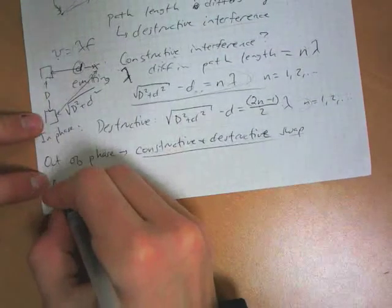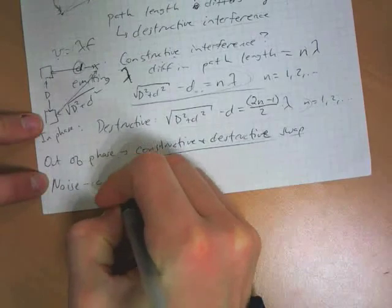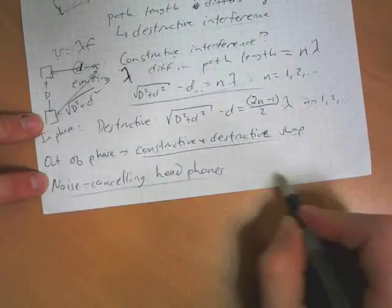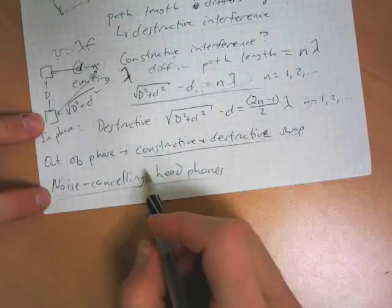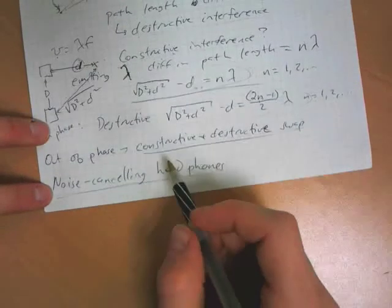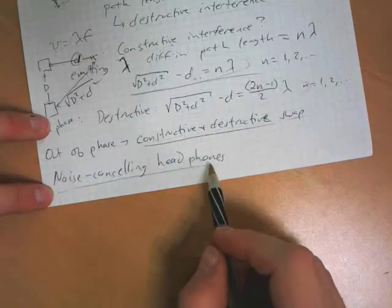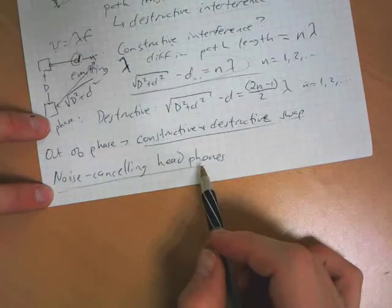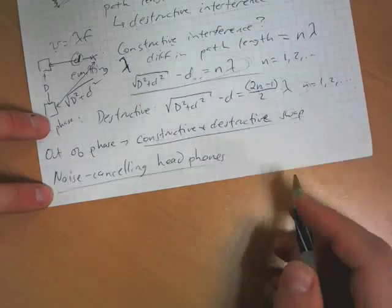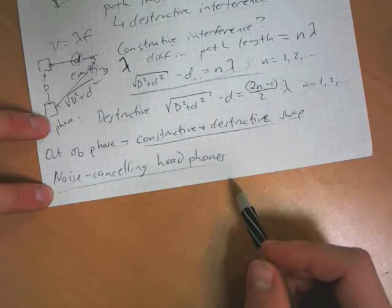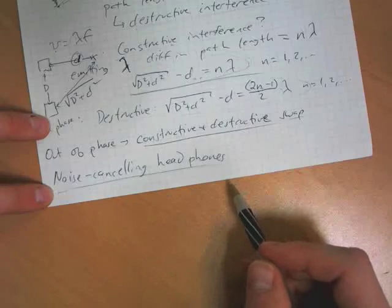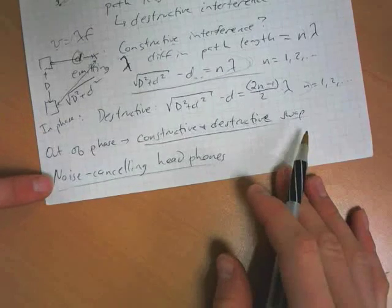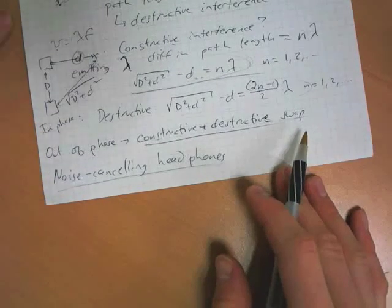Another application of interference are noise cancelling headphones. Noise cancelling headphones, I mean, headphones in general block out a fair amount of sound, but noise cancelling headphones go a step further because they kind of pick up what ambient sound there is in the environment, and then they emit the, sort of the opposite, an out of phase sound that has the same properties, and therefore destructively cancel out whatever sound is coming in from your environment, and that's how they work.